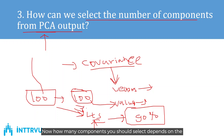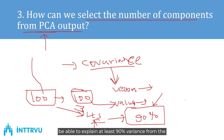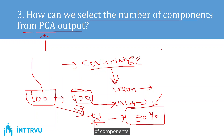How many components you select depends on how much variance those components can explain. Generally, in the industry it is recommended that after applying PCA, the number of components selected should be able to explain at least 90% of the variance from the data — and this is how you select the number of components.